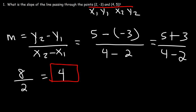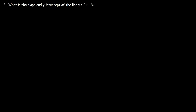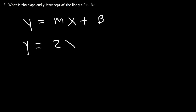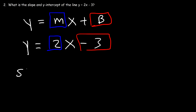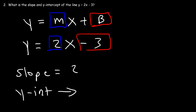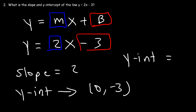Number two: what is the slope and y-intercept of the line y equals 2x minus 3? This equation is in slope-intercept form, which is y equals mx plus b. Here m represents the slope and b is the y-intercept. So the slope is 2 and the y-intercept is negative 3. You can write the y-intercept as an ordered pair (0, -3) or simply as negative 3.